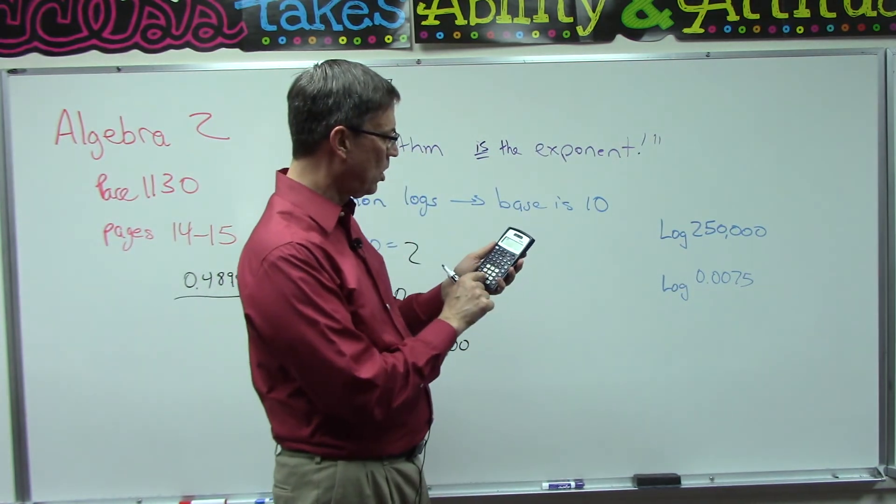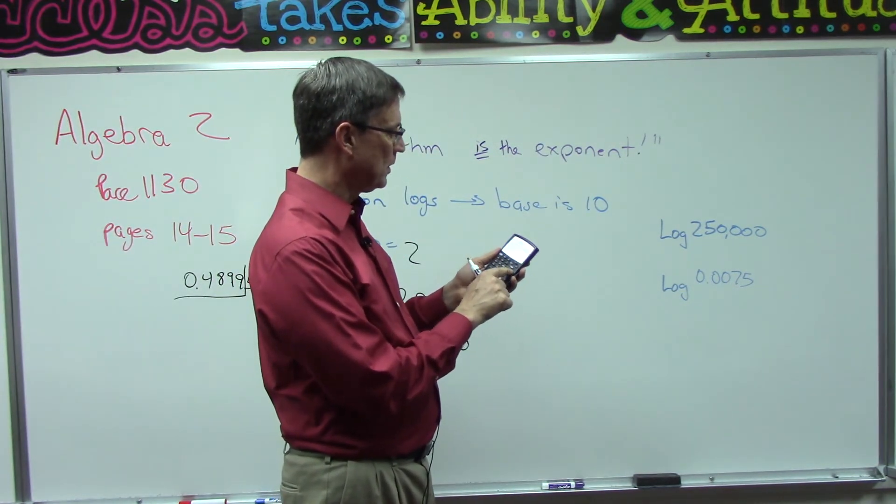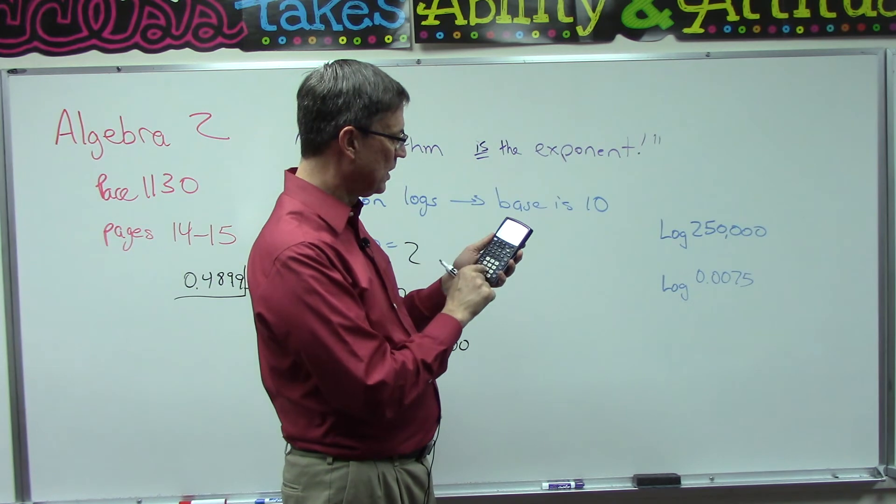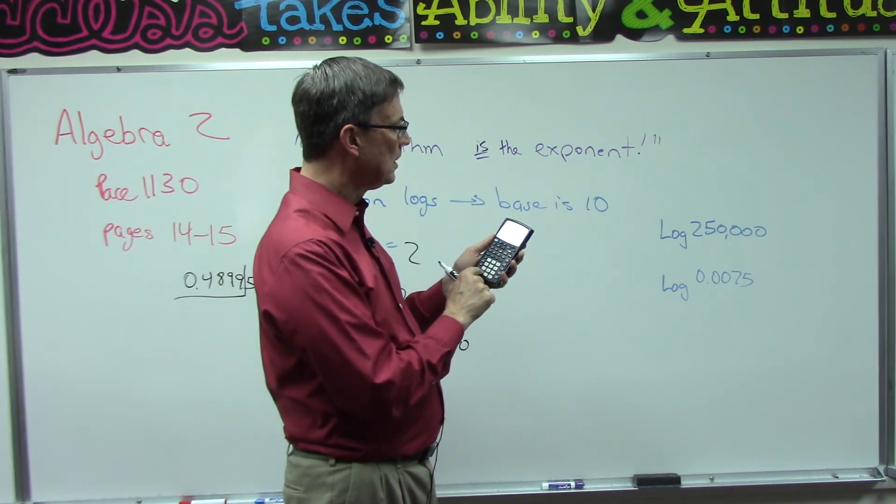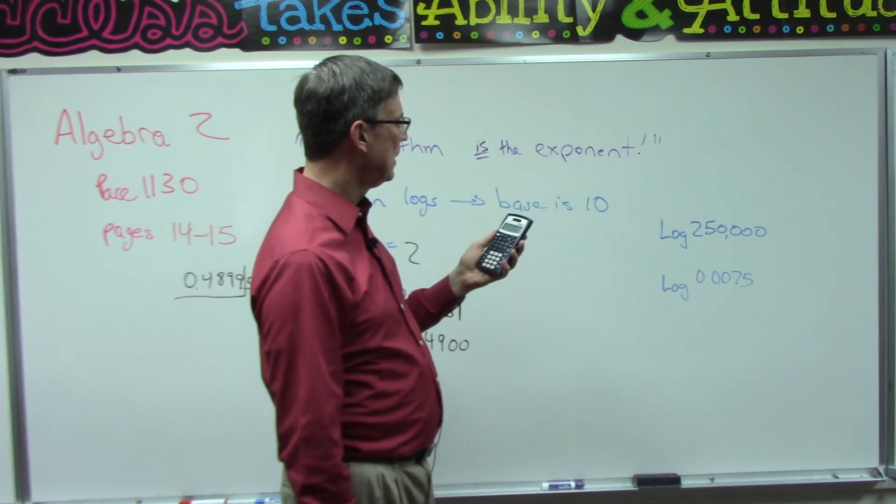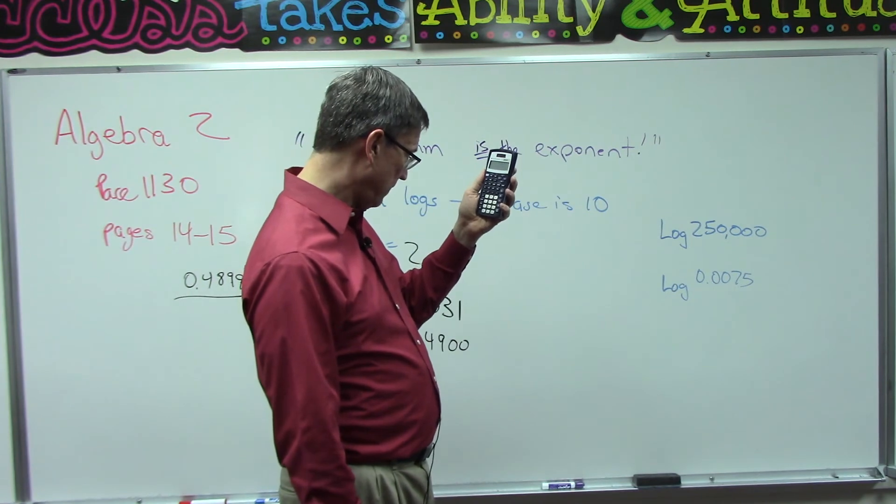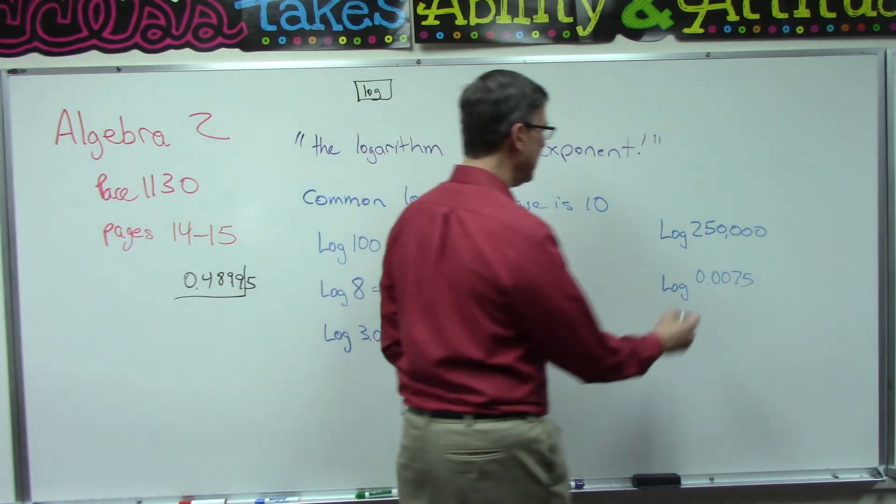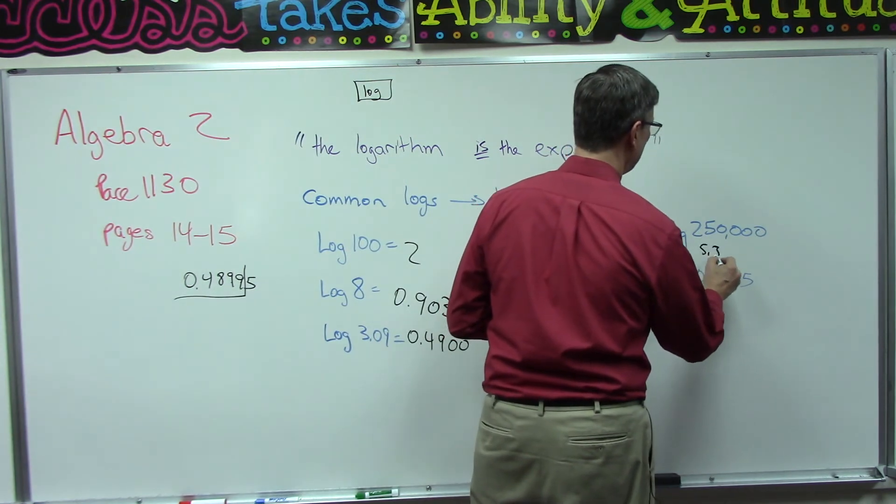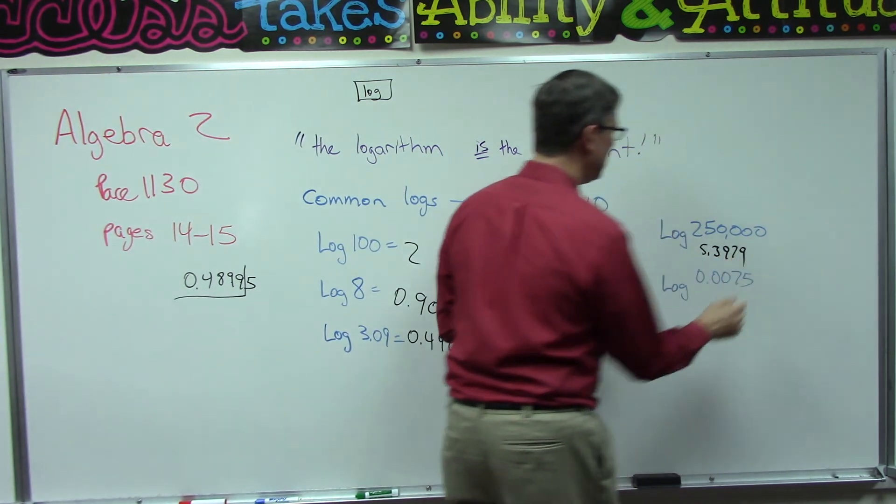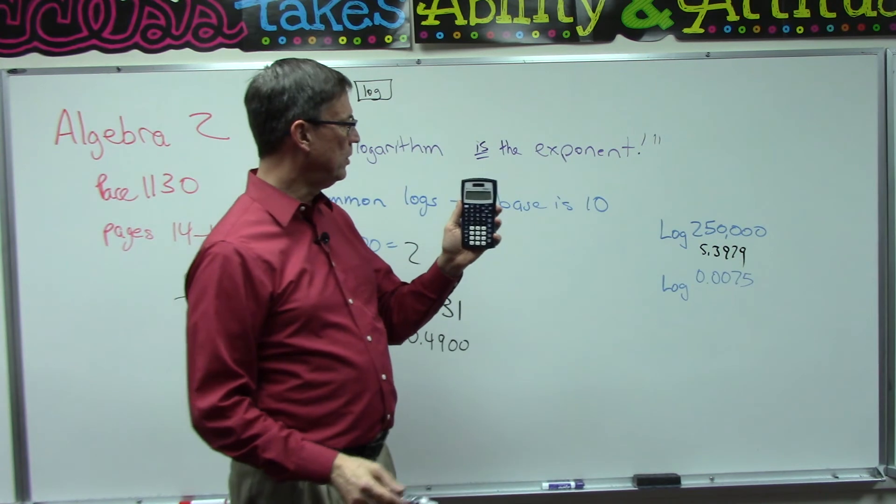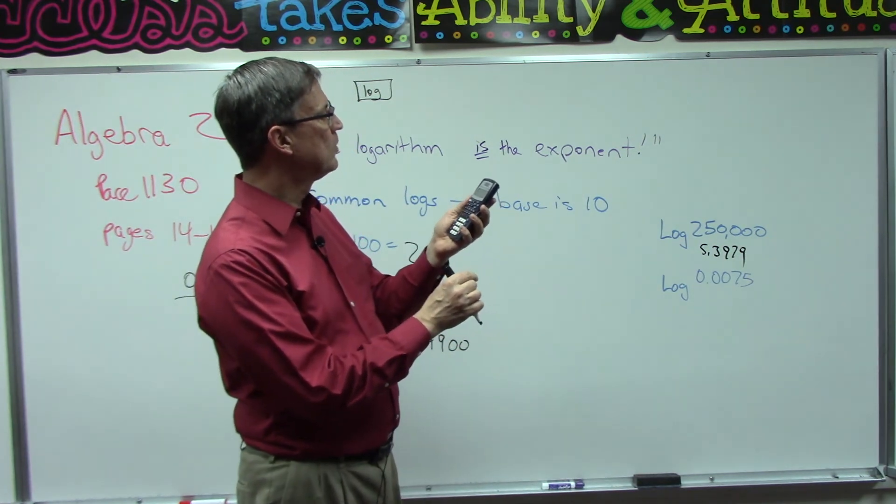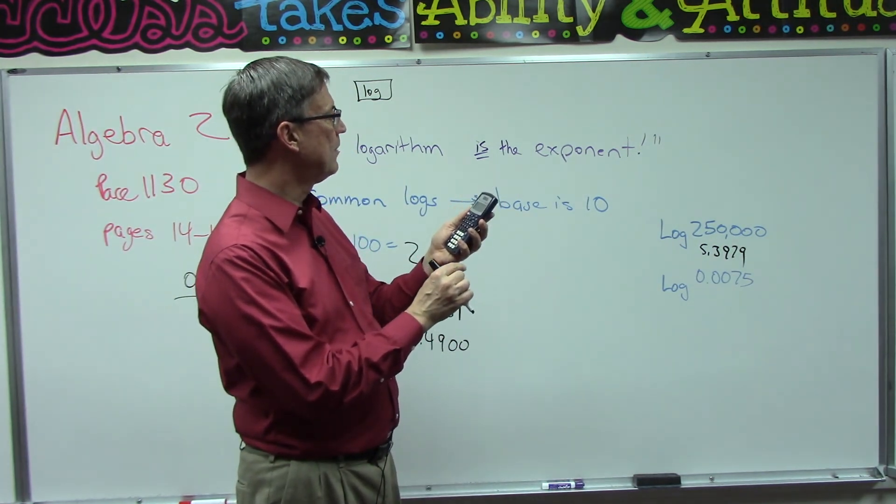Those are the olden days. We don't need to use charts to find square roots and logs and things like that. So let's find the log of 250,000. I did log first, 250,000, then hit enter. All right, 5.3979. So try that on your calculator and see if you get the same thing, 5.3979.